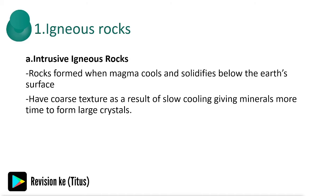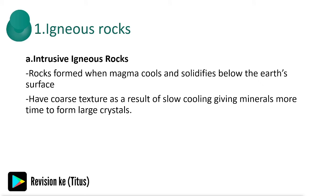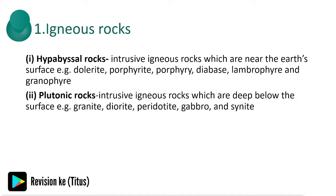To clarify the difference: intrusive rocks form and solidify below the earth's surface. Hypabyssal rocks are below the earth's surface but near it, while plutonic rocks are deep below the earth's surface — that is the key difference between these two subtypes.